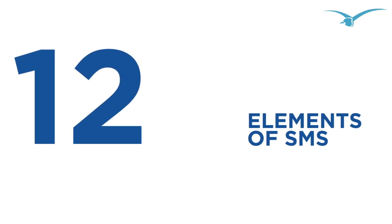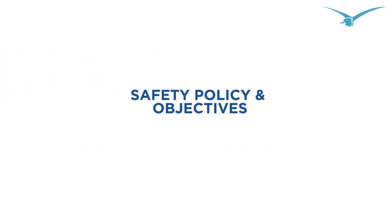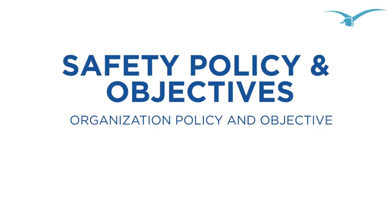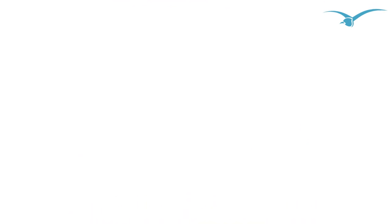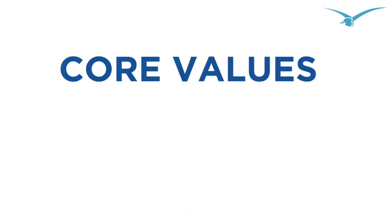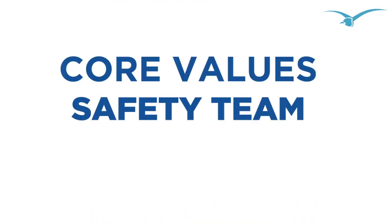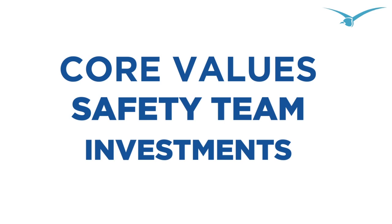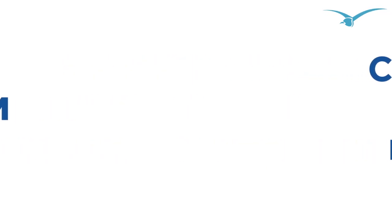The Safety Management System components include, first, safety policy and objectives. We own a clearly defined organization policy and objective on safety that has been the pillar of our products and services. Management's commitment to safety is manifested through our core values, possessing a highly qualified safety team, as well as making investments in various safety processes and systems.